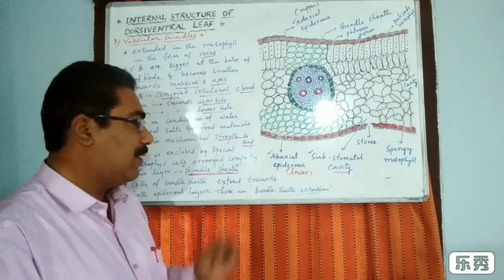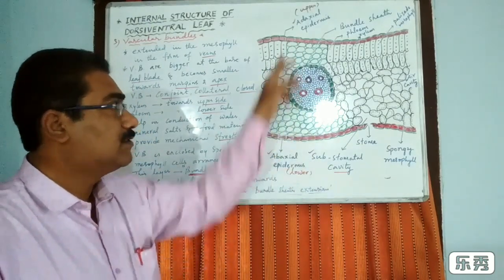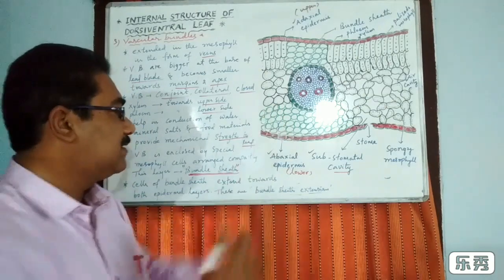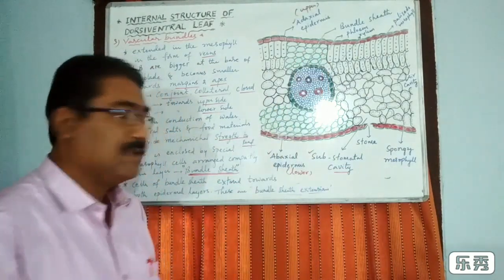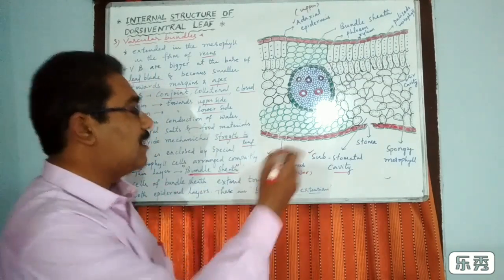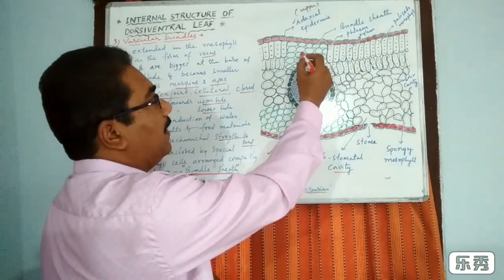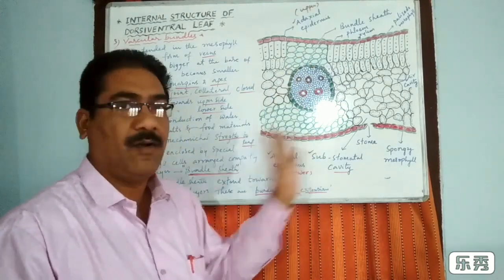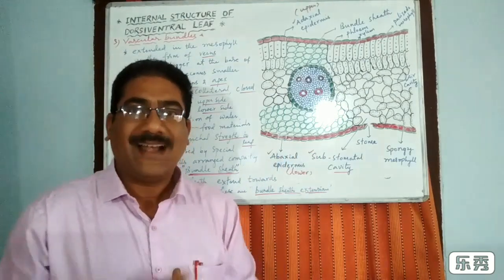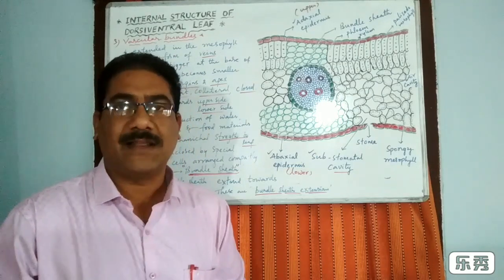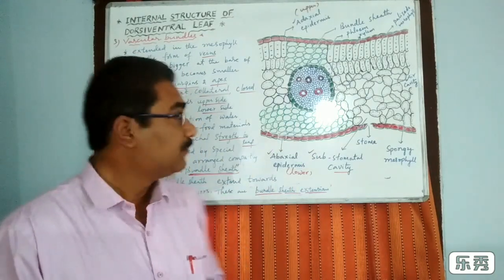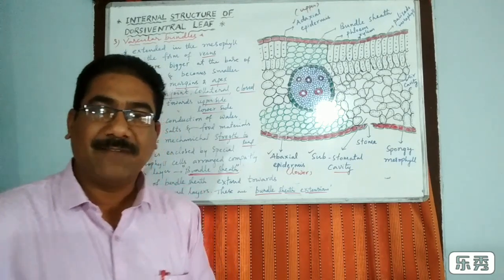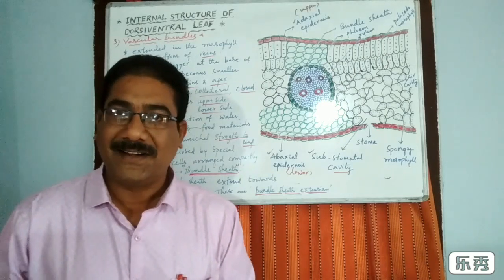The cells of the bundle sheath extend towards both the upper and lower epidermal layers. These extensions are called bundle sheath extensions. Bundle sheath extensions help in the conduction of food materials from mesophyll cells to the vascular bundles. These are the most important points for the dicot leaf.